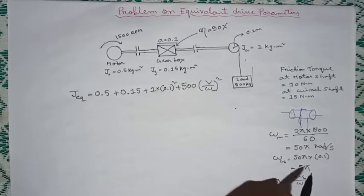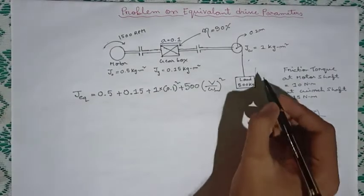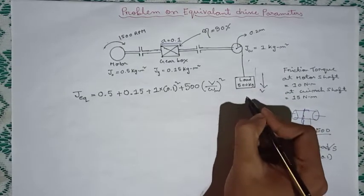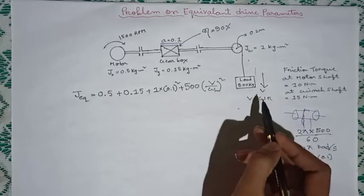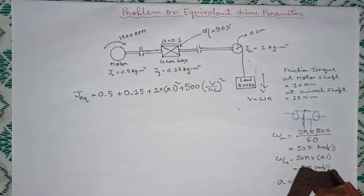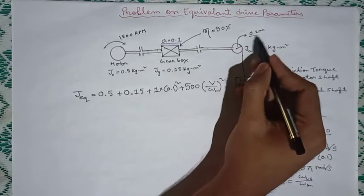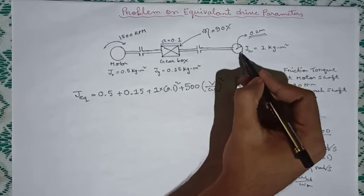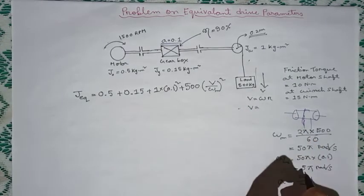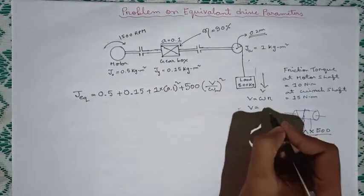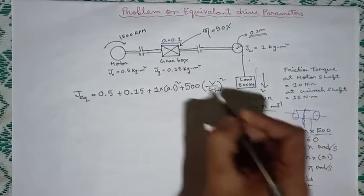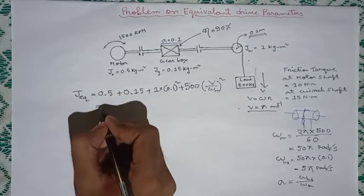Now to get the linear velocity of the load v, we know the relation that v is equal to omega times r. Now the omega is 5 pi radian per second and r is given as 0.2 meter, the radius of this wind drum. So the linear velocity will be 5 pi times 0.2 meter, that is pi meter per second.